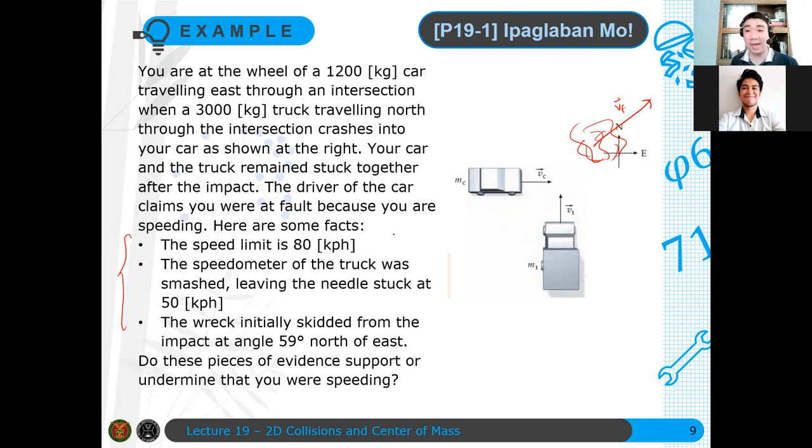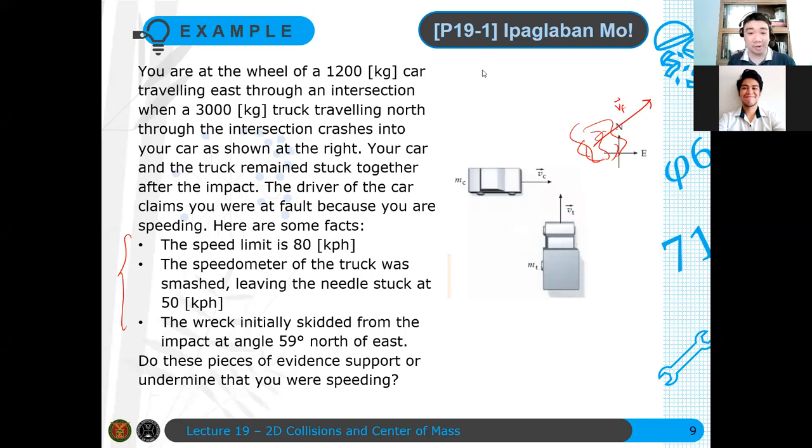So 50 kph is the velocity of the truck when it collides with the car. Now, we don't know how fast the wreckage is. We don't know that. And the wreck initially skidded from the impact at an angle 59 degrees north of east.